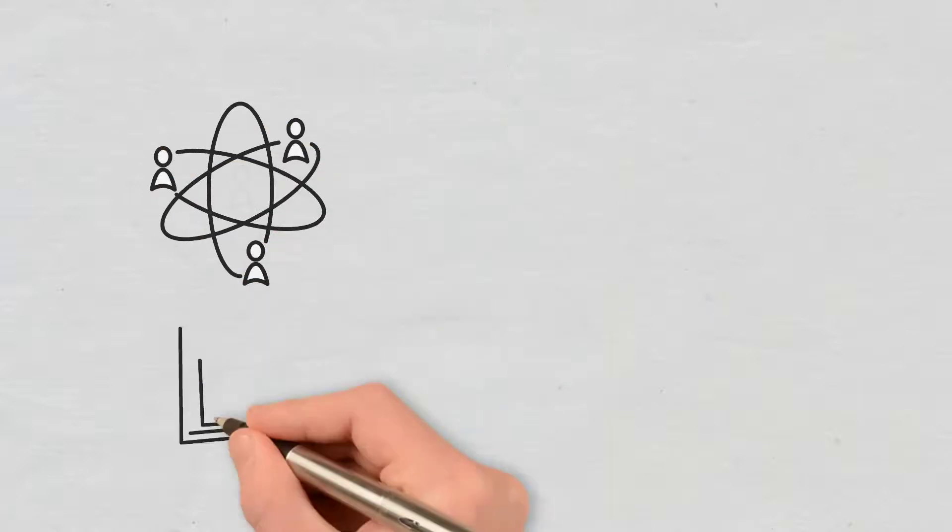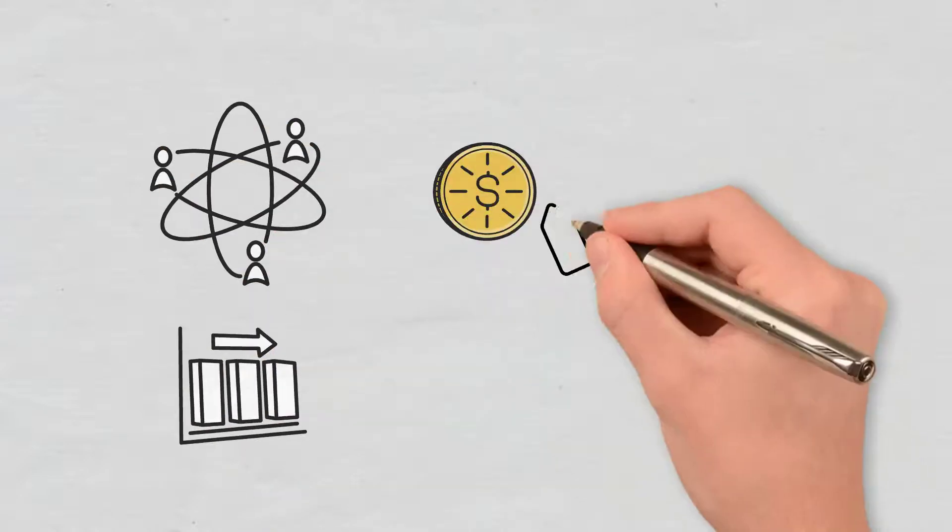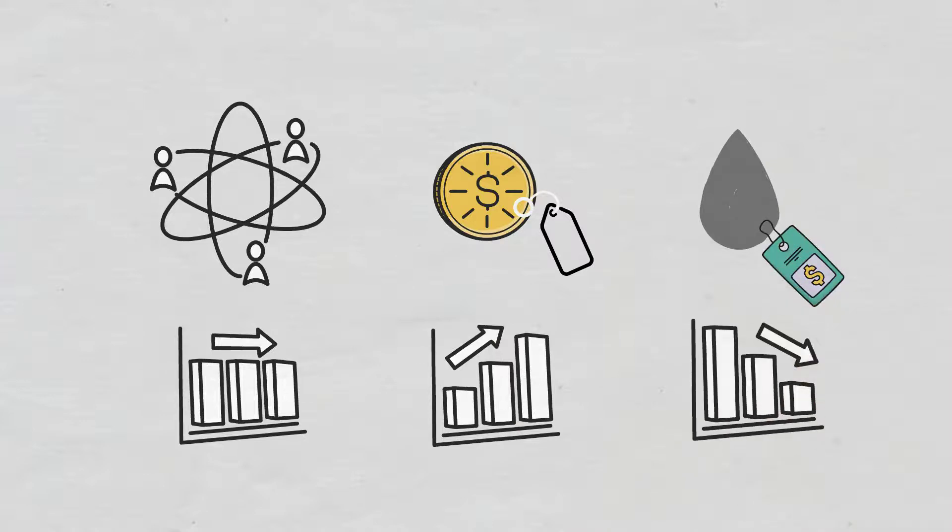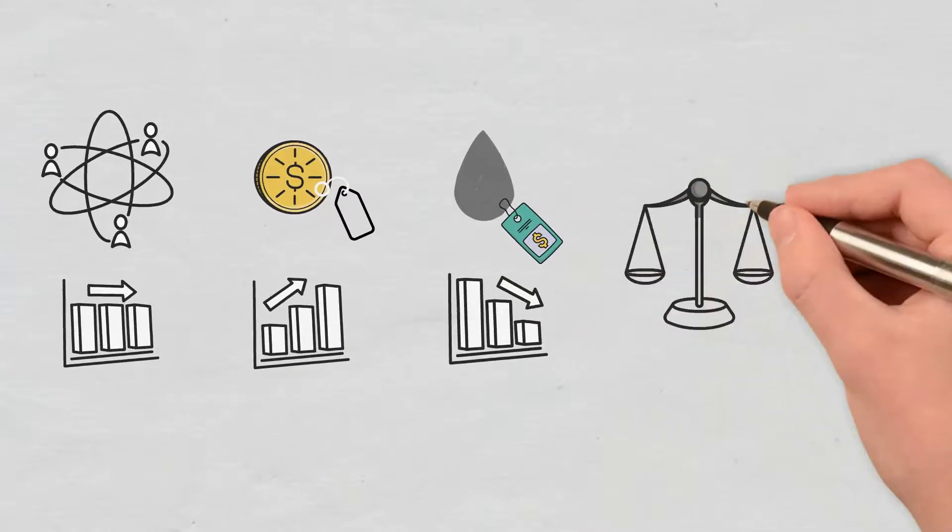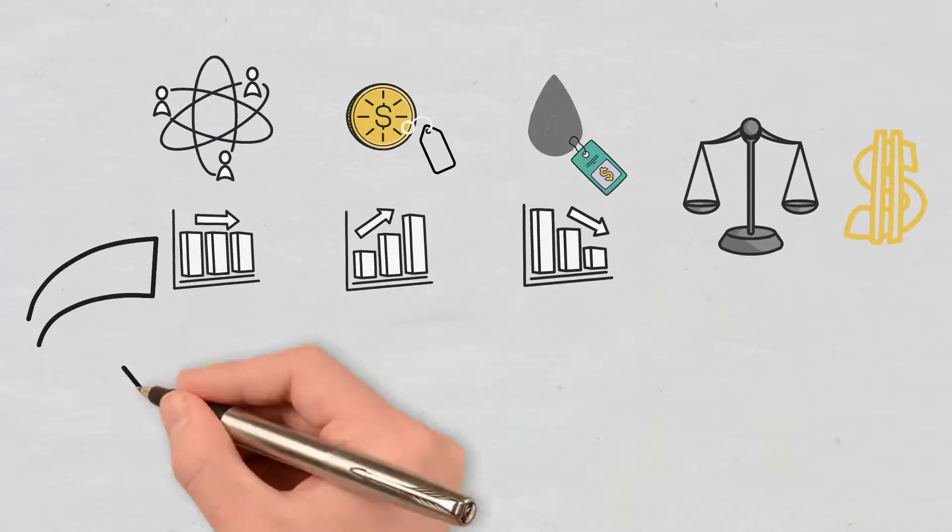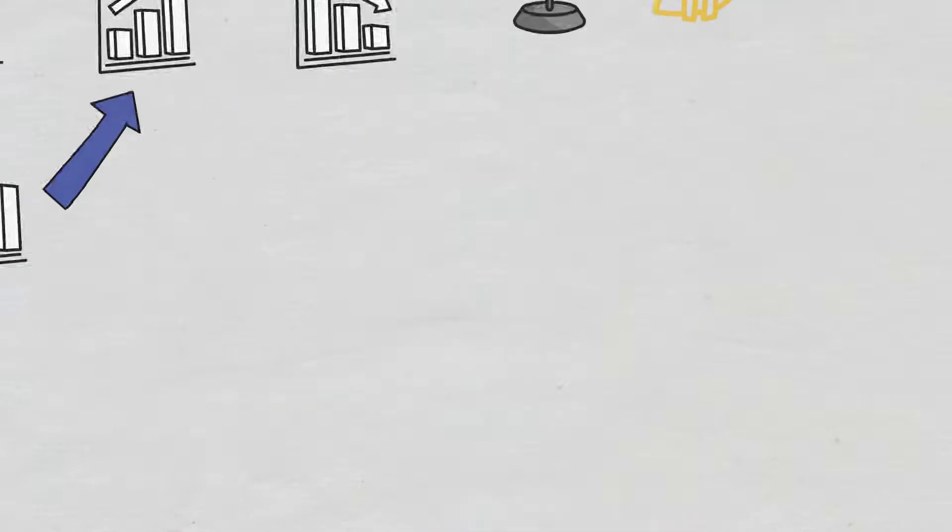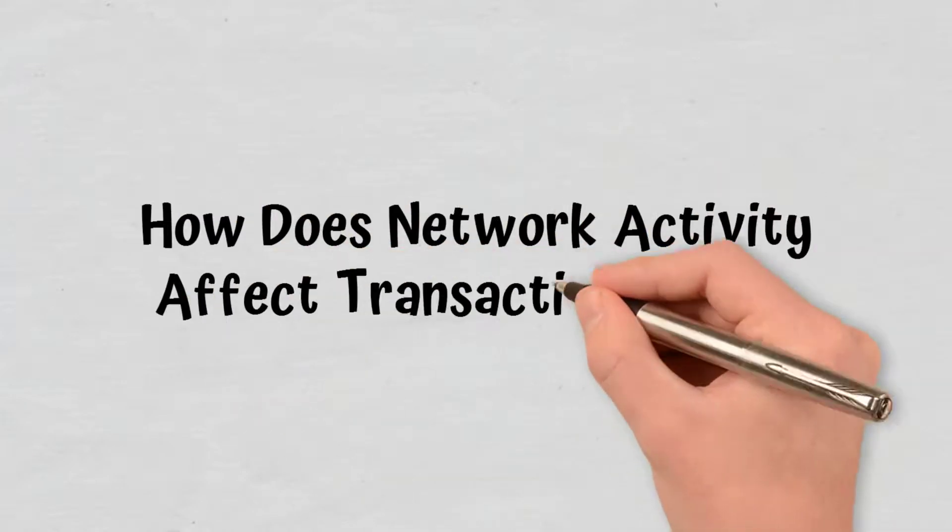In theory, if the network activity is always the same but the cryptocurrency price rises, gas fees should decrease so that the cost of the transaction converted to Ether can remain the same when converted to dollars or any other fiat currency. In reality, the increase in network activity actually causes the cryptocurrency price to rise.